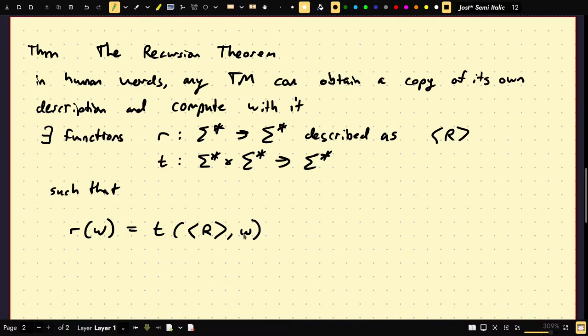So basically, R is just itself, but with its own description. So T computes with its own description, somehow. So the proof is actually very similar, which is why we proved the existence of a Turing machine, which prints its own encoding first.